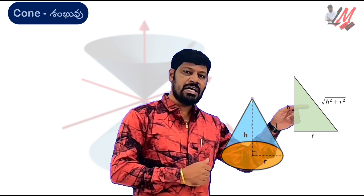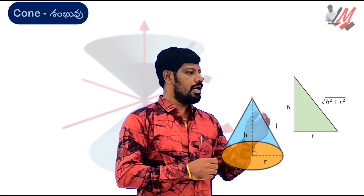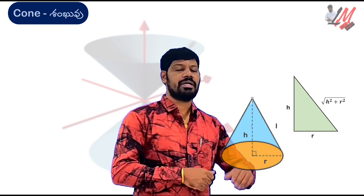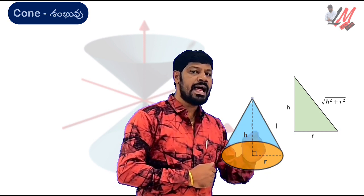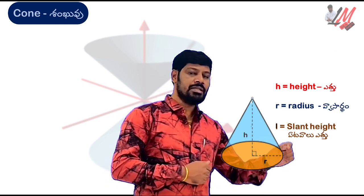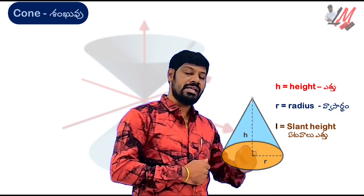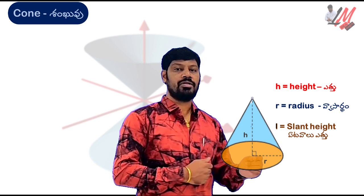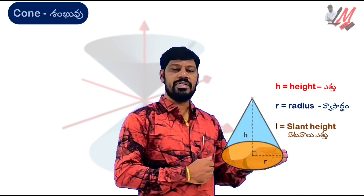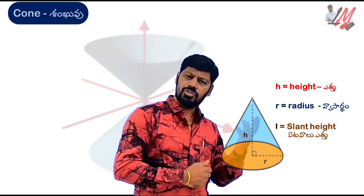We have a diagram showing the hypotenuse. We have a slant height. We have the radius and hypotenuse. We also have the radius and the height.